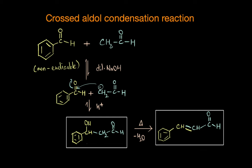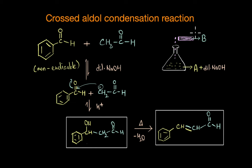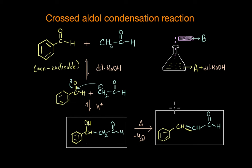We can carry out this reaction successfully in the lab by adding the compound with the alpha hydrogen — acetaldehyde — slowly into a solution containing the non-enolizable benzaldehyde in basic medium. This way, acetaldehyde as soon as it comes in contact with the basic medium forms the corresponding enolate ion, which immediately reacts with the large excess of benzaldehyde, giving us one major product almost exclusively.